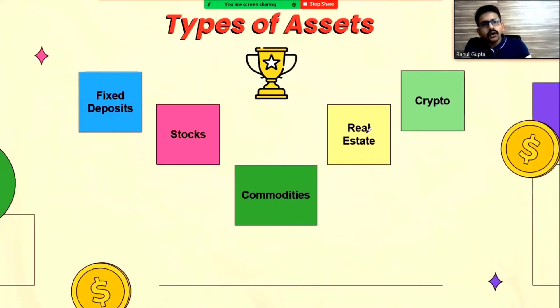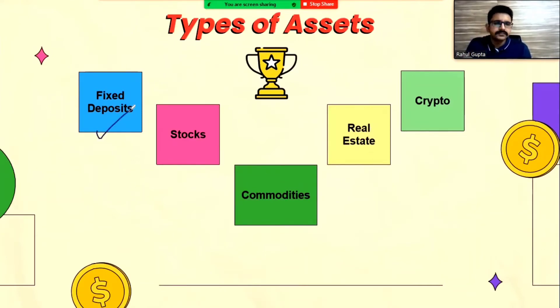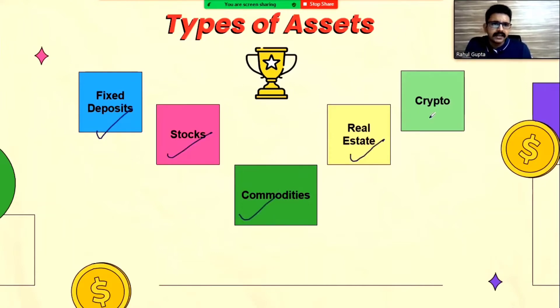In the previous video, we discussed there are different kinds of asset instruments that we have in the market: fixed deposit, stocks, commodity, real estate, and crypto.